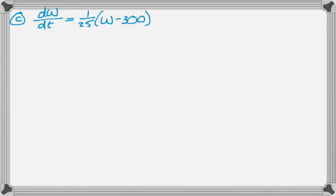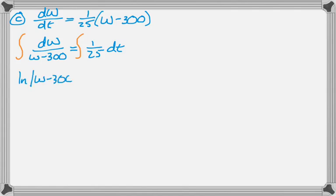So we'll start out with this. We'll separate and throw some integral signs in there. Integrate. Don't forget on the left-hand side, it's the absolute value. And then definitely do not forget your plus C, which goes on the side with the independent variable.